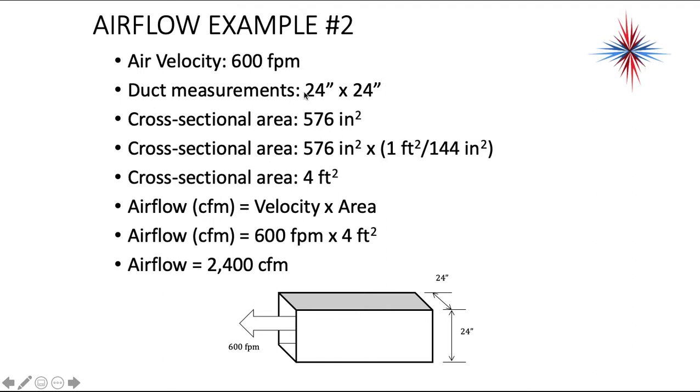So let's take this. Then we multiply it out. 24 by 24 cross-sectional area is 576 inches squared. We have to get this to square feet. So we know there's 144 square inches in a square foot. We take it to cross-sectional area 4 square feet.